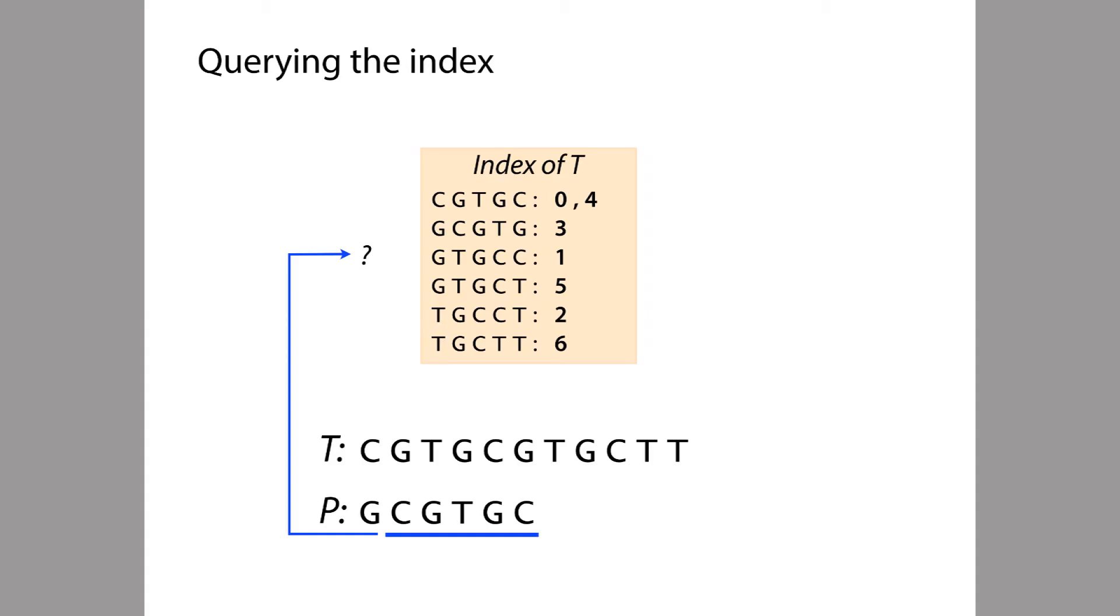Here is a variation on that. What if instead of taking the first 5-mer from P, we took the second 5-mer from P? In a sense, this doesn't matter very much, because the index contains all the 5-mers from T. So whether we query it with the first 5-mer from P or the second 5-mer from P, any of them should really work. None of them will fail to find a match of P within T. So let's go ahead and take the second 5-mer from P and query the index. This time, our 5-mer occurs twice in the text T, once at offset 0 and once at offset 4. So we have to do two different verifications.